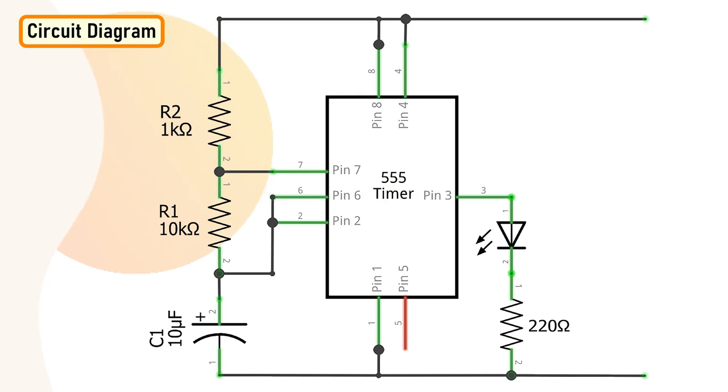By changing the value of R1, R2 and C3, we can change the frequency of output pulse generated at pin number 3. Let me explain this with the help of an animation.